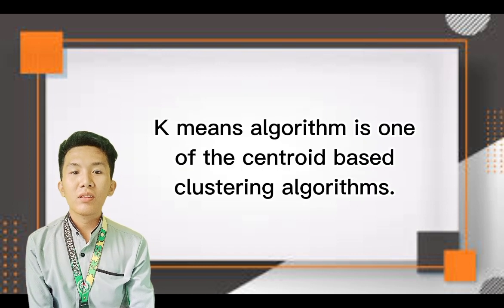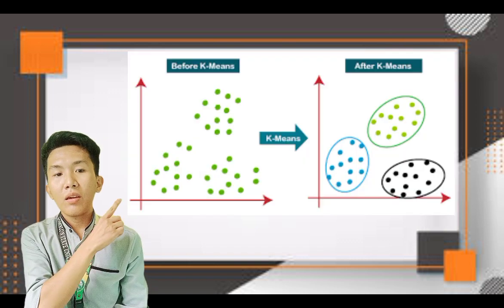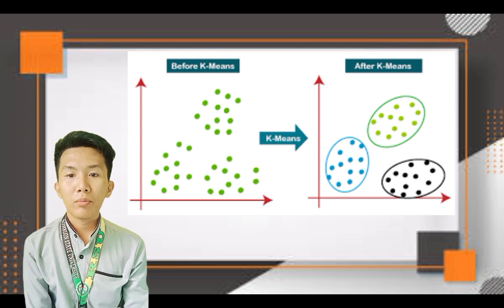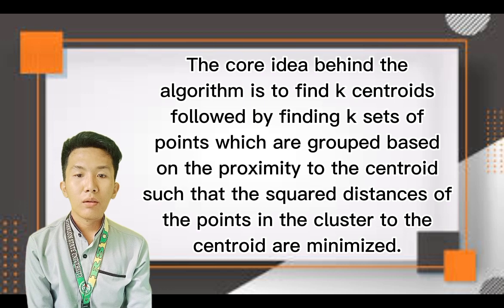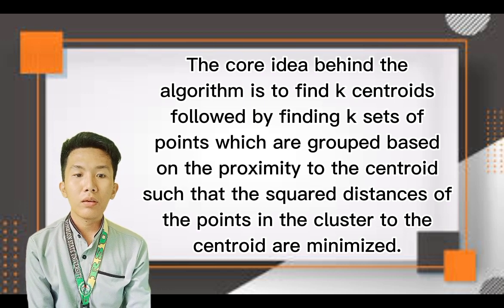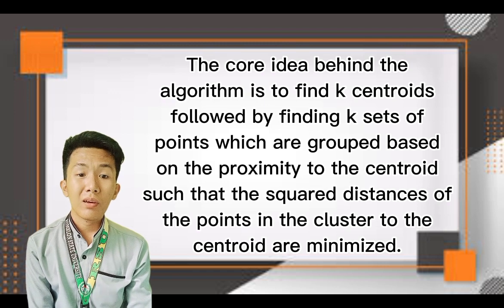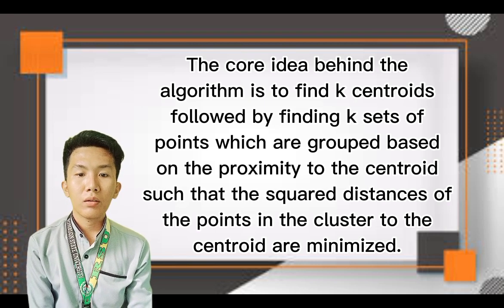The K-means algorithm is one of the centroid-based clustering algorithms. Here, K is the number of clusters, which is the hyperparameter to the algorithm. The core idea behind the algorithm is to find K centroids, followed by finding K sets of points which are grouped based on the proximity to the centroid, such that the squared distances of the points in the cluster to the centroid are minimized.